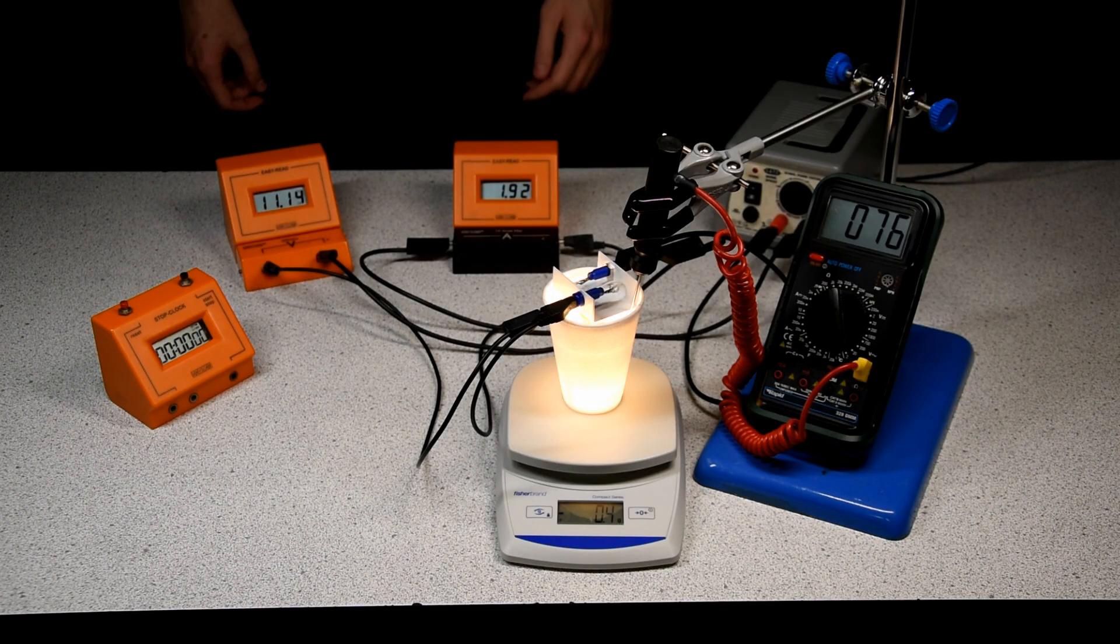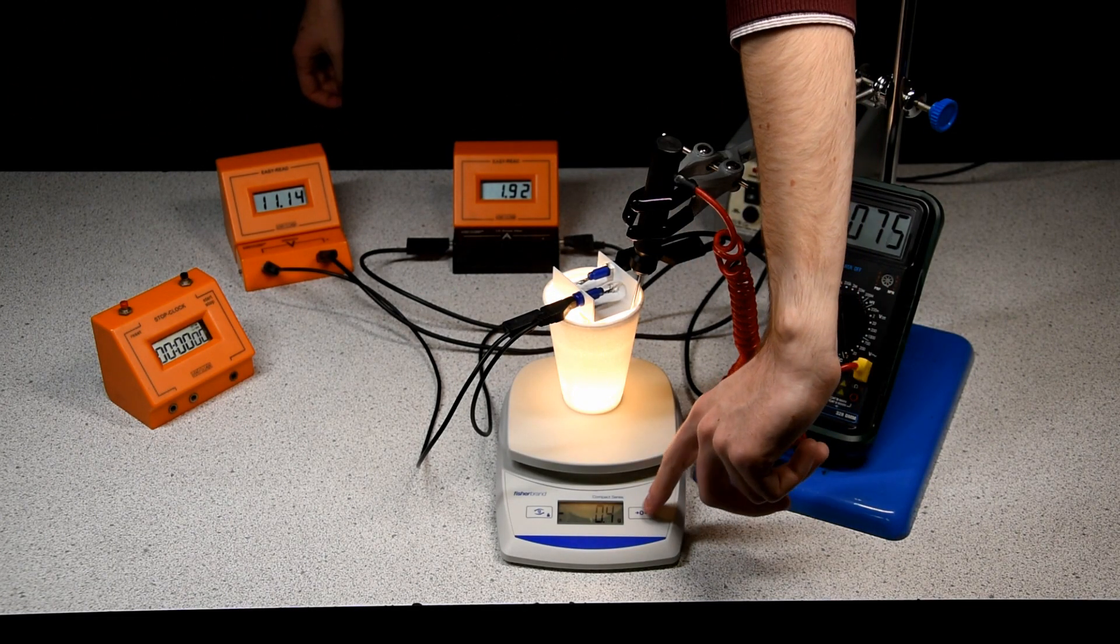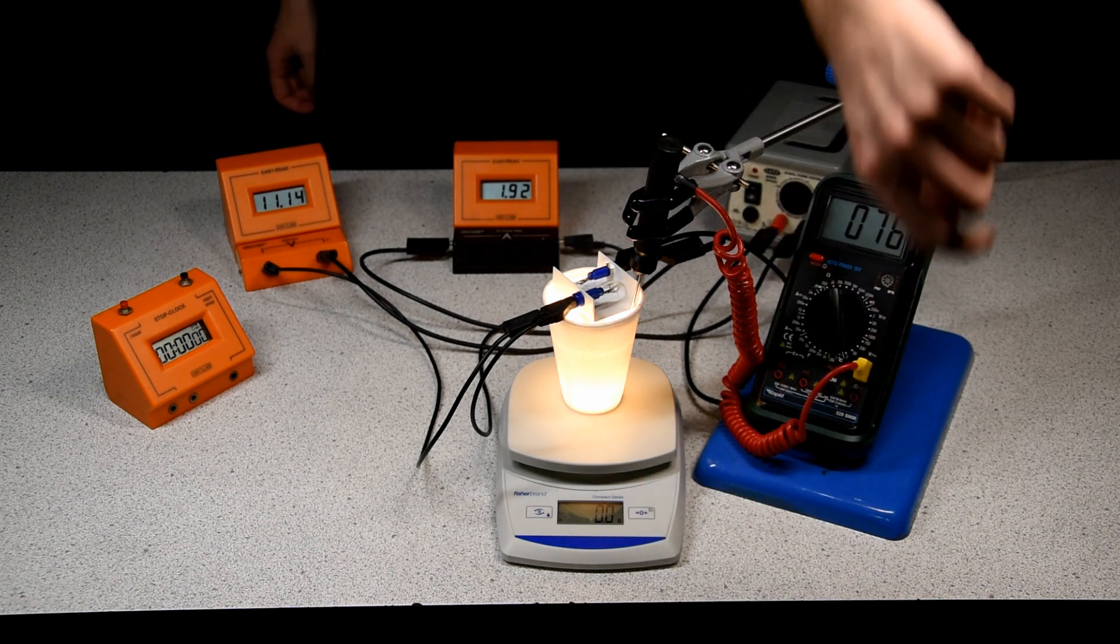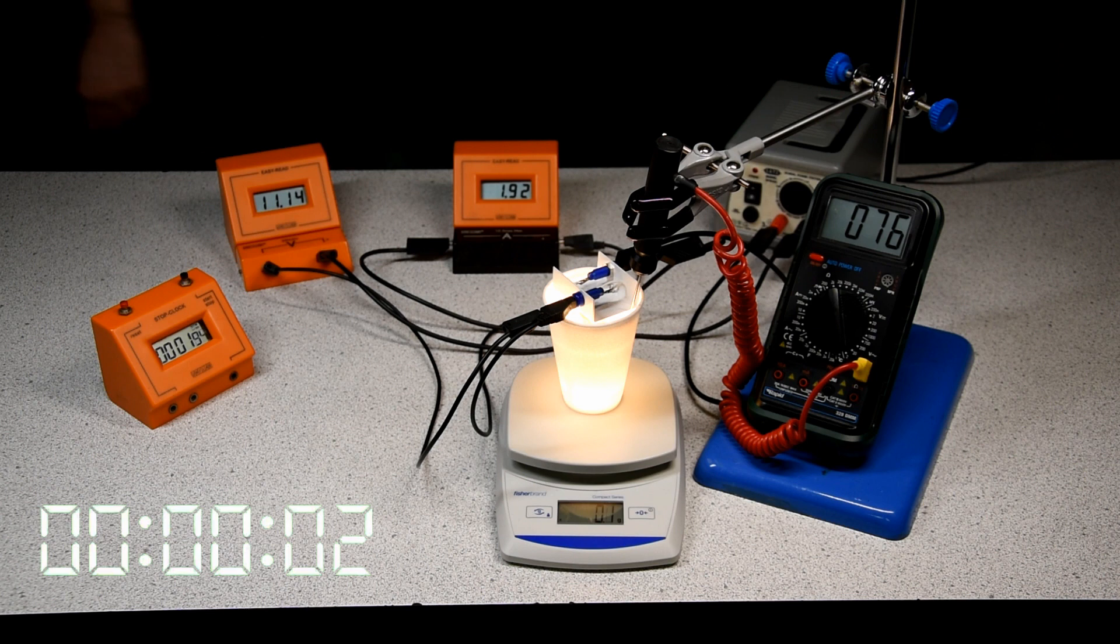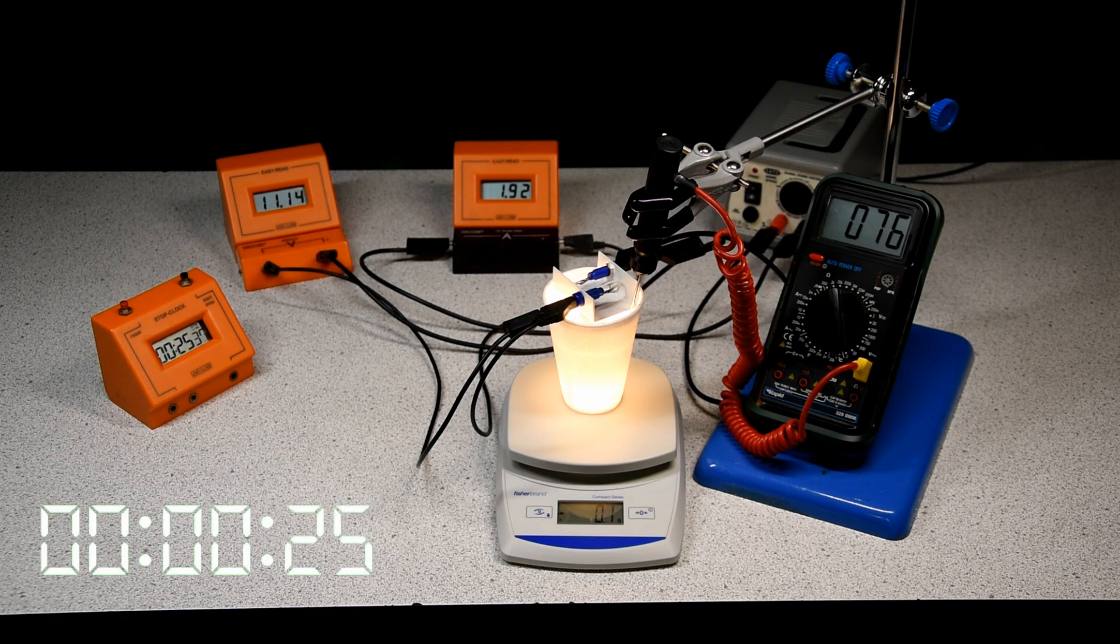The heater is being used to keep water at a constant temperature. It's been on for a while, and the water has settled at 76 degrees. If we zero the balance and start the stopwatch at the same time, we can look to see what mass of water is lost through evaporation as the water is being heated. But we can also measure the amount of energy that causes that mass loss.